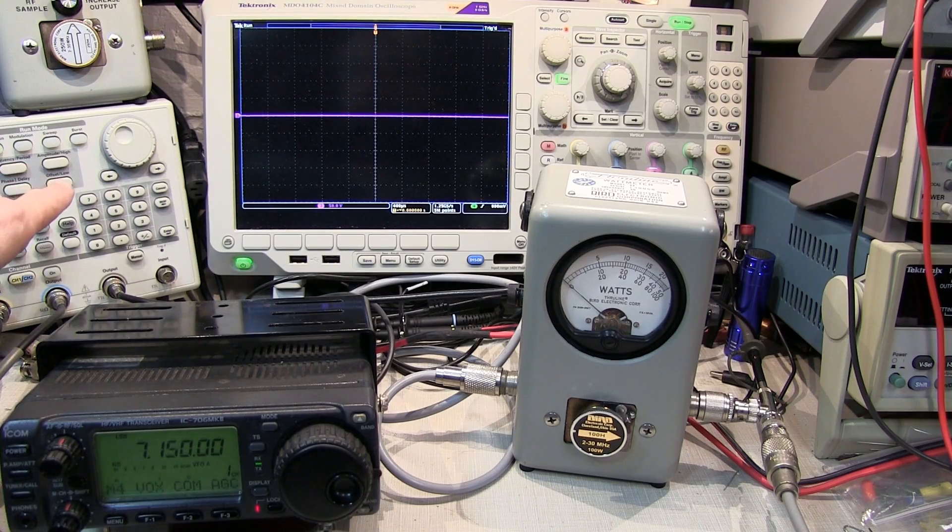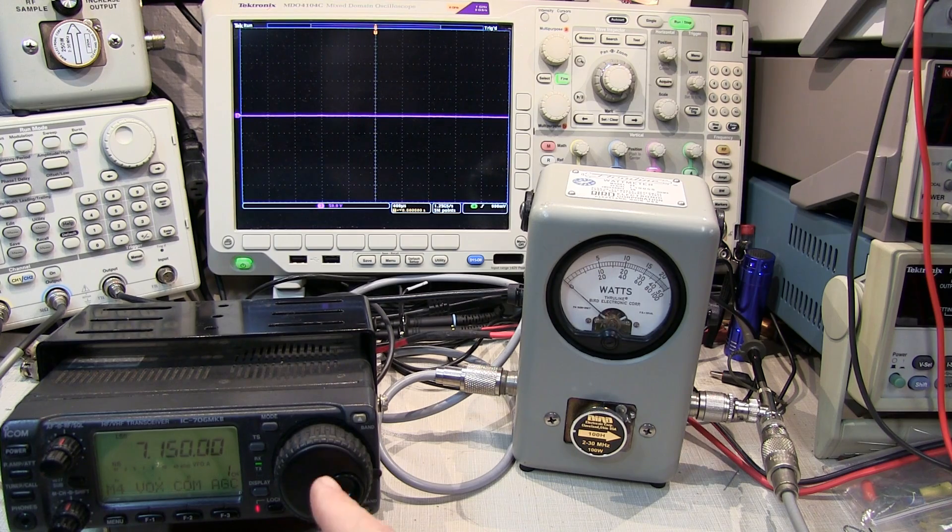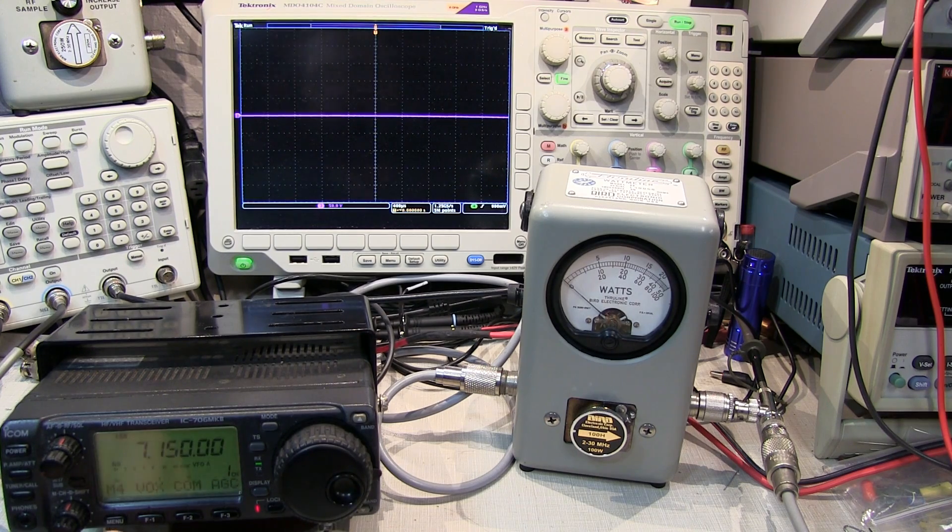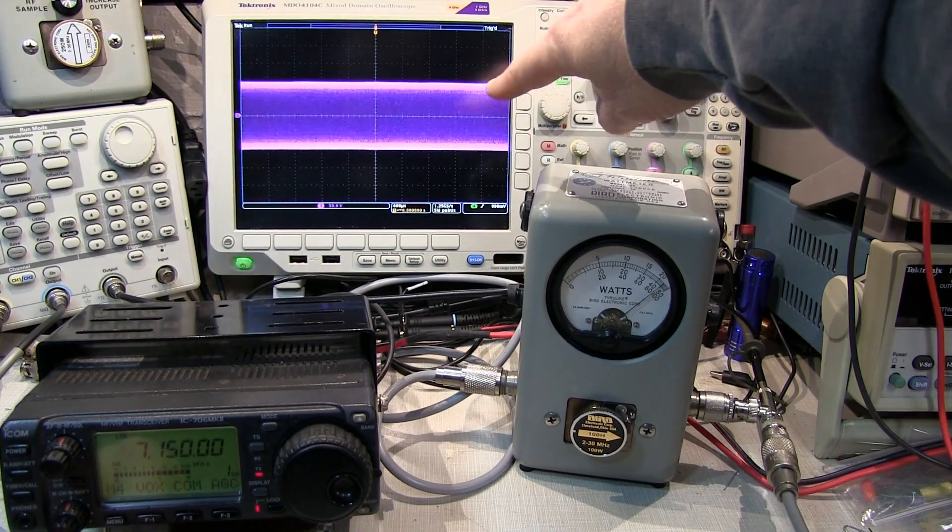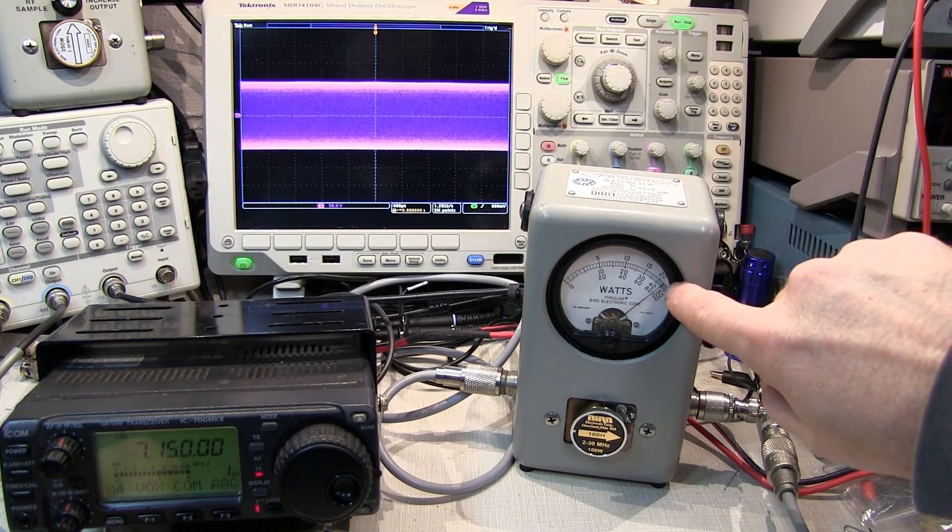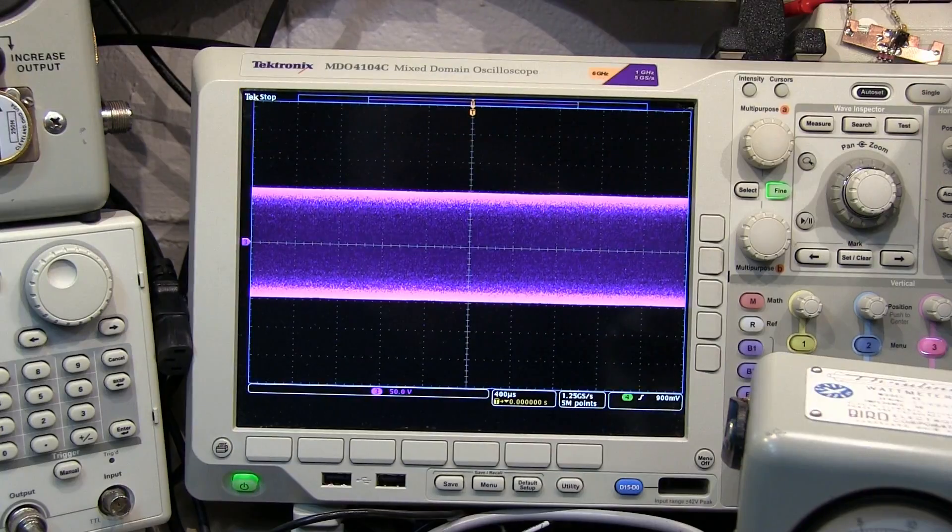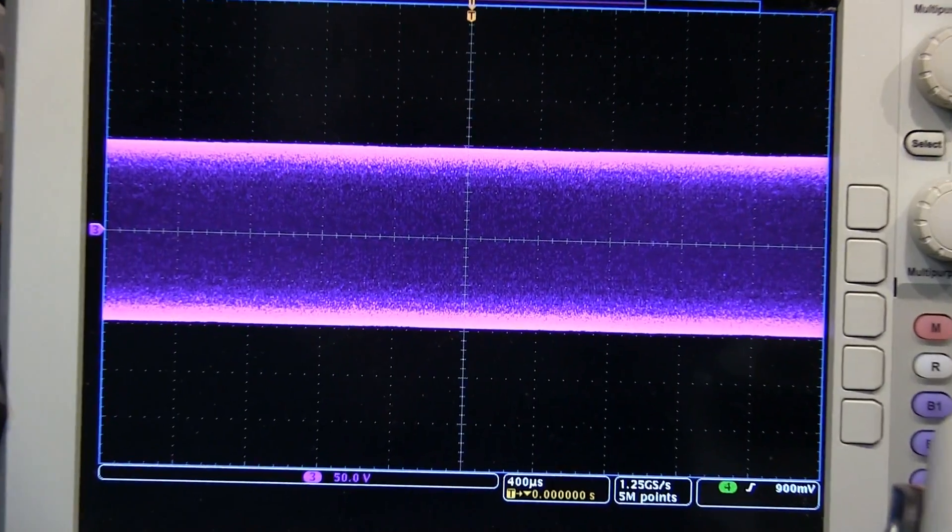So I've got my signal generator here set to give me a 1 kHz single tone into the microphone input of the radio. And if we key the radio up, we can see a constant amplitude RF envelope like we'd expect to see. And if we look at the meter, we're looking at about 90 watts of peak envelope power.